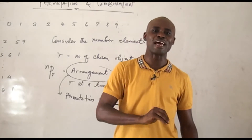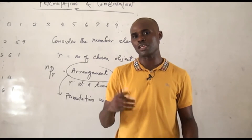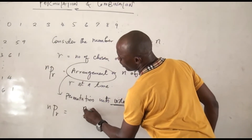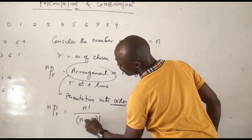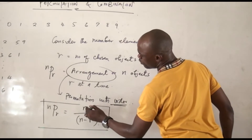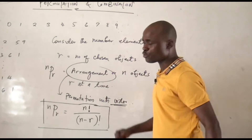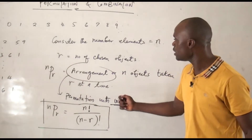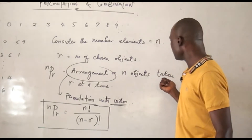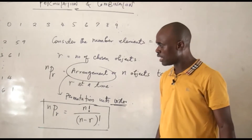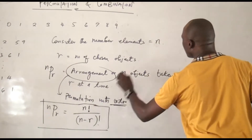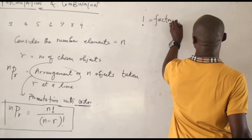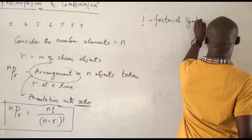The formula for NPR is actually equal to N factorial over N minus R factorial. This is the formula we use to resolve problems that have to do with permutation — N factorial divided by N minus R factorial. This is the number of ways you can arrange N objects taking R at a time. You can see something that looks like an exclamation mark — that is called the factorial symbol.